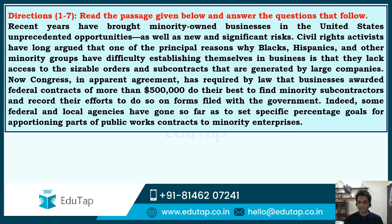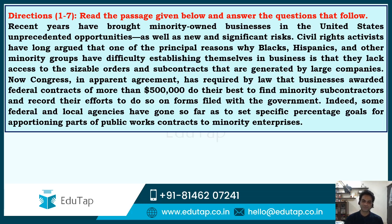Congress, in apparent agreement, has required by law that businesses awarded federal contracts of more than $500,000 do their best to find minority subcontractors and record their efforts on forms filed with the government. Indeed, some federal and local agencies have gone so far as to set specific percentage goals for apportioning parts of public works contracts to minority enterprise.